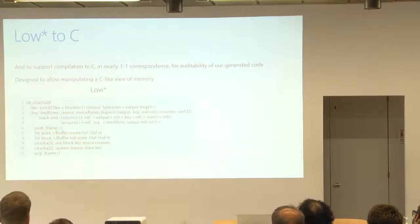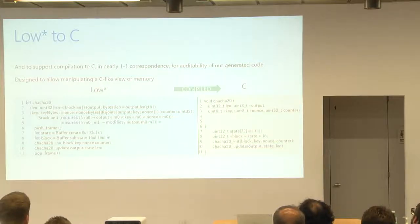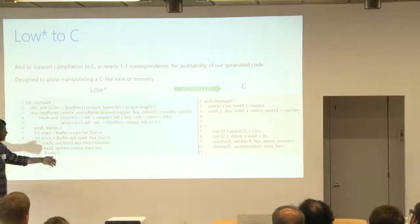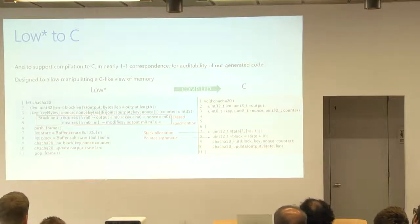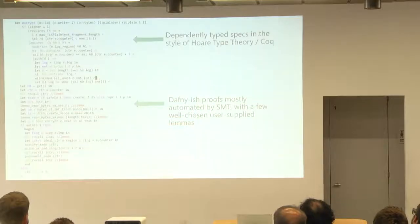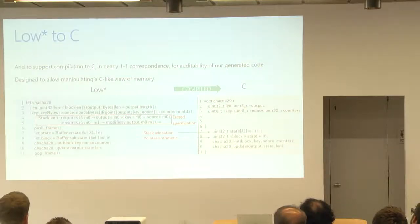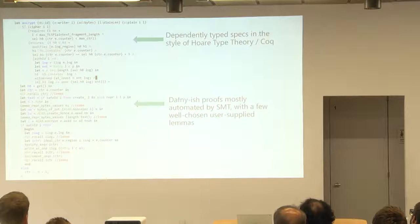So to give you a sense of what that looks like, here's an implementation in F-star and a spec of the ChaCha20 stream cipher, and if you compile it to C, you get something that's roughly in one-to-one correspondence with the F-star code that you wrote, that's got stack allocation, pointer arithmetic, and the spec that you wrote in F-star, it vanishes as you get C code.